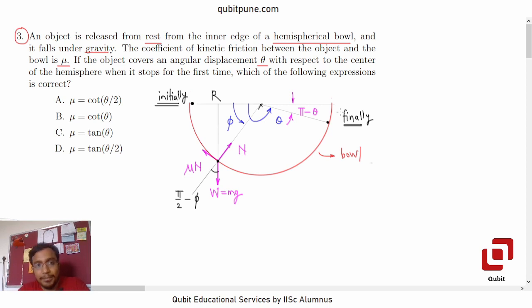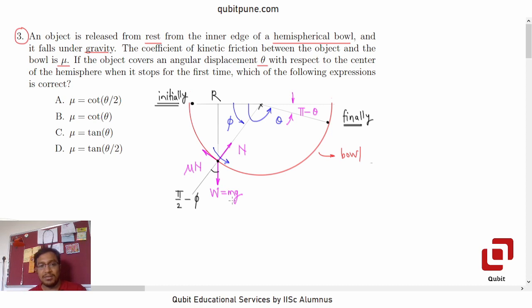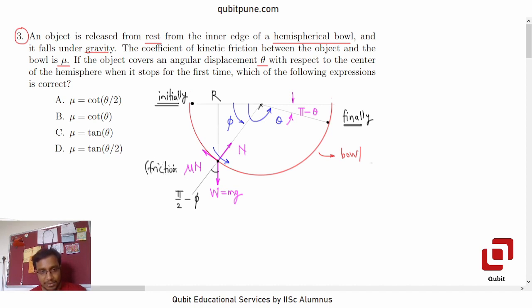To solve this problem, let us introduce the radius of the hemisphere as r. I have also shown an instant somewhere in between its journey from the initial position to its first stop, and I have called that angular displacement as phi. This is the free body diagram. The object is moving along the bowl. The weight forever acts downwards: W equals m times g. The normal reaction is directed towards the center, and because the motion is from left to right, the frictional force direction is from right to left. So mu times n is the frictional force.